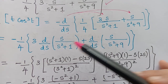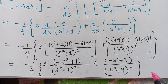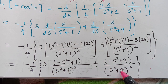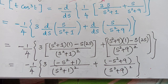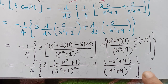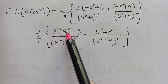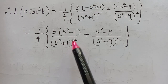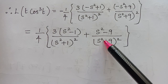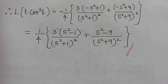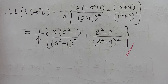Applying the u/v method on each term — and the detailed explanation of this method can be found in previous video lectures — we arrive at the final answer: L{t·cos³t} = 1/4 · [3(s² − 1)/(s² + 1)² + (s² − 9)/(s² + 9)²]. Hope you have understood both problems discussed in this lecture. More problems on this topic will be covered in upcoming video lectures, so kindly follow those to better understand this concept. Thank you.